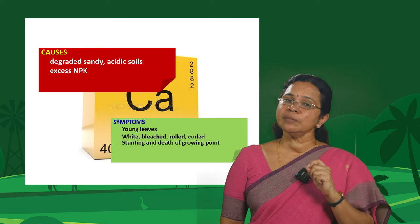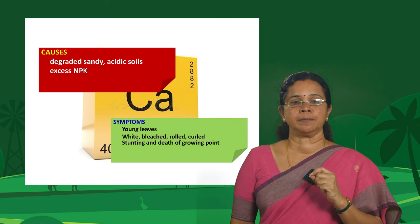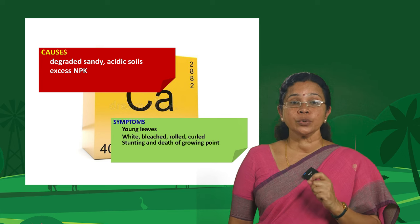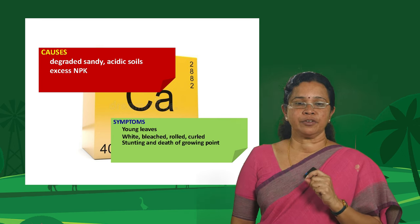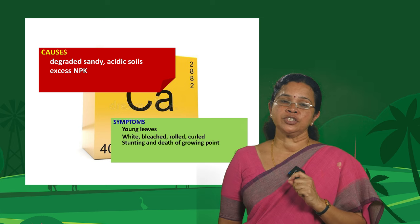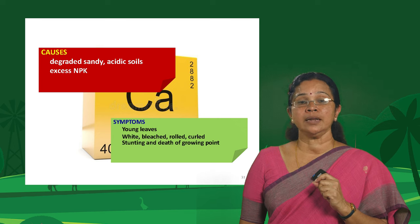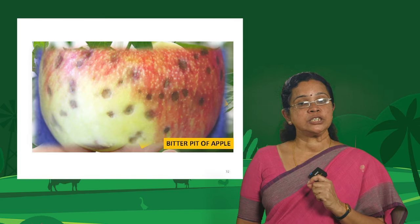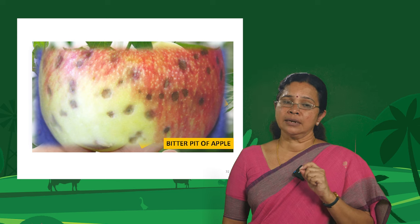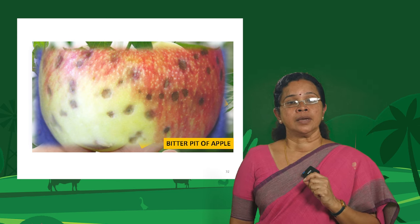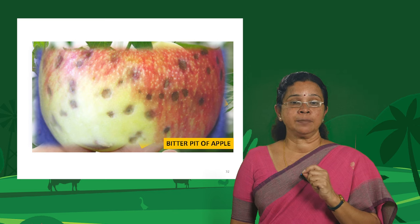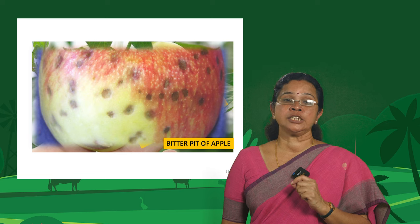The leaves turn white, bleached, rolled or curled, and the growing point is stunted due to calcium deficiency. A typical symptom is blossom end rot of tomato, and bitter pit of apple — small pit-like formations on the surface — due to disrupted cell division and cell formation. In banana, you can see that the tip of the young leaf has not unfurled, which is a typical calcium deficiency symptom.